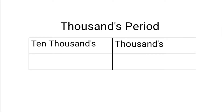Next is the thousands period. Under the thousands period, there will be two places: thousands and ten thousands. After the first three digits, the fourth and fifth digits will be written under the thousands place. We use a comma to separate the thousands period and the ones period.